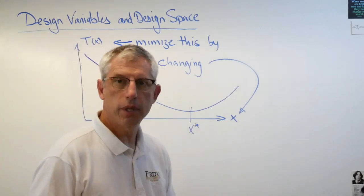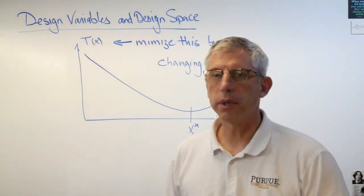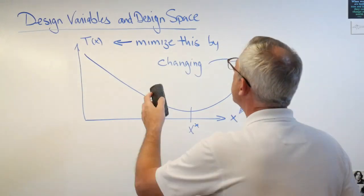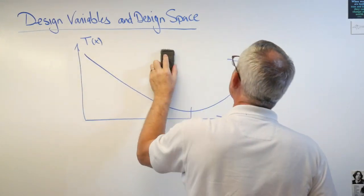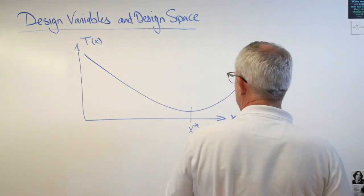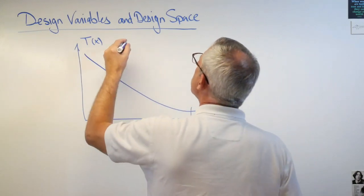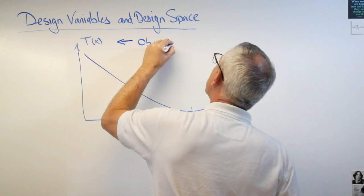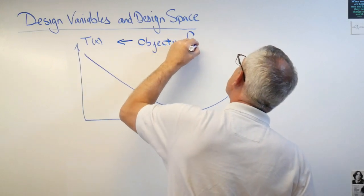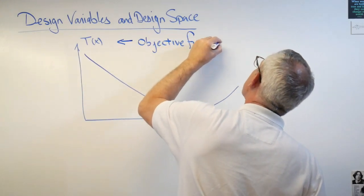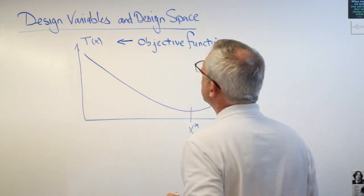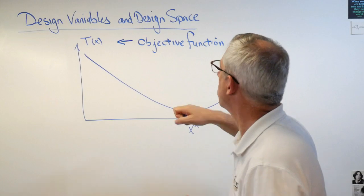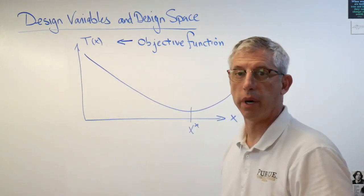Now in the optimization world these have more specific names. This is okay but it's not specific enough. It's not tight enough. It's not descriptive enough. The name of this is called the objective function. And you'll see this in every optimization paper, every optimization book you'll ever see. And we're going to use that term for the rest of the class. The objective function is the thing you're trying to minimize or maximize.